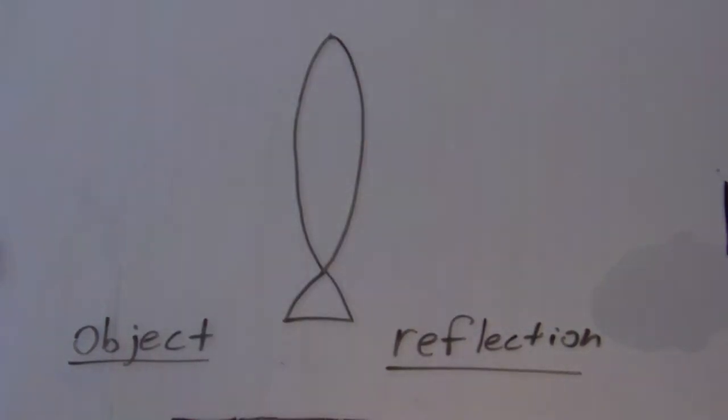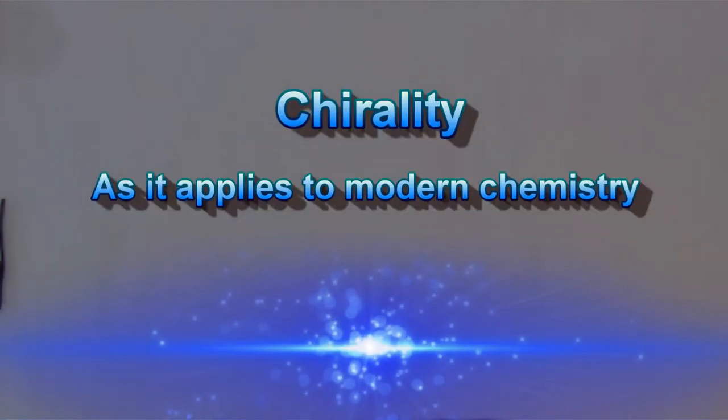In this case, the reflection is not superimposable upon the object. Now, let's take a look at chirality and how it applies to modern chemistry.